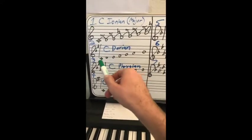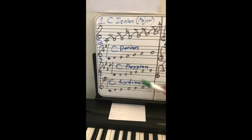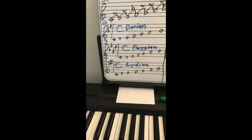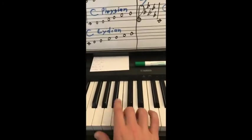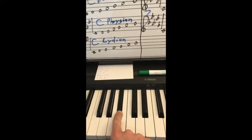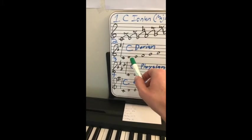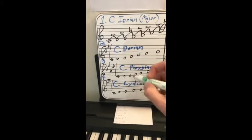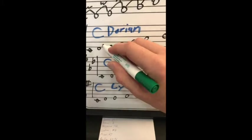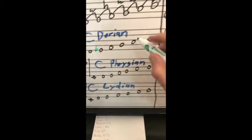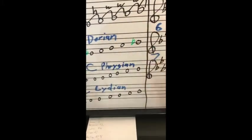Dorian is a second mode. That means C is the second note of what major scale? It's a major second above what? Major second above B flat. It's a second mode of B flat major. B flat is the key of two flats, B flat and E flat. So, I'm going to put those in here. E flat and B flat. We've now created Dorian.